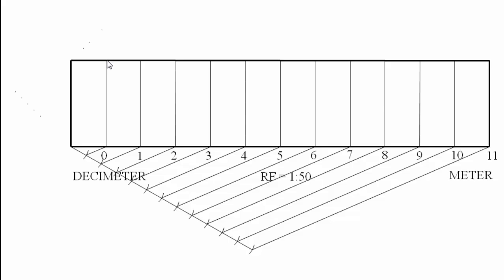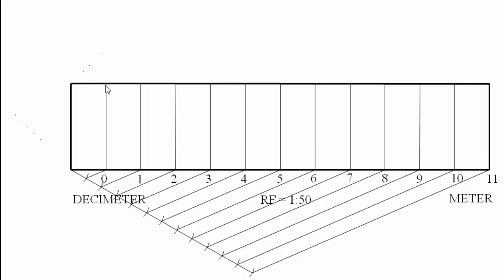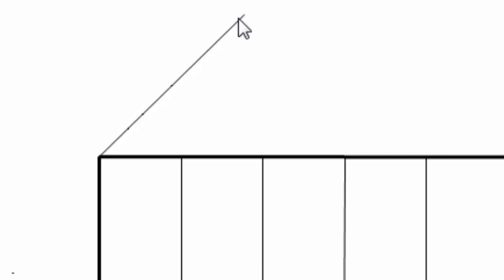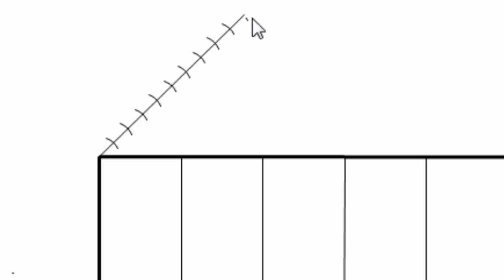This portion towards the left of zero represents a distance of 1 meter, which is equivalent to 10 decimeters. To precisely see a division of 1 decimeter each, we need to divide this line into 10 equal parts. From this point, draw a line of any random length at any suitable angle and place arcs of 5 millimeters radii. Since this line has to be divided into 10 parts, place 10 arcs.